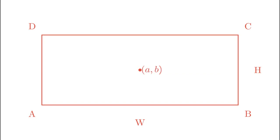And the starting point is A, B and the coordinates of the corners turn out to be (0, 0), (W, 0), (W, H) and (0, H).